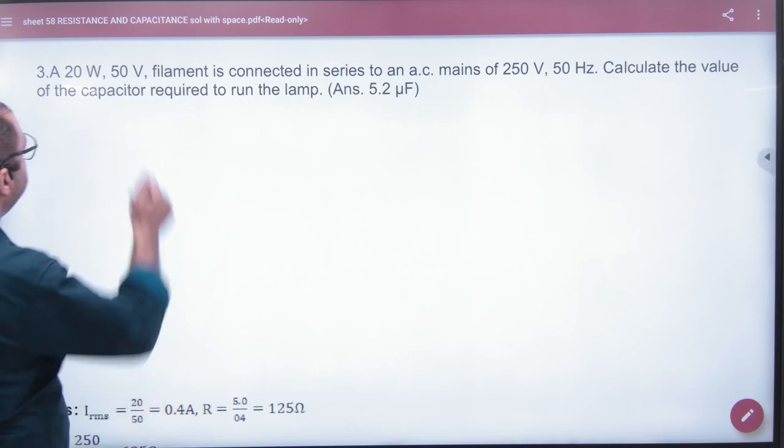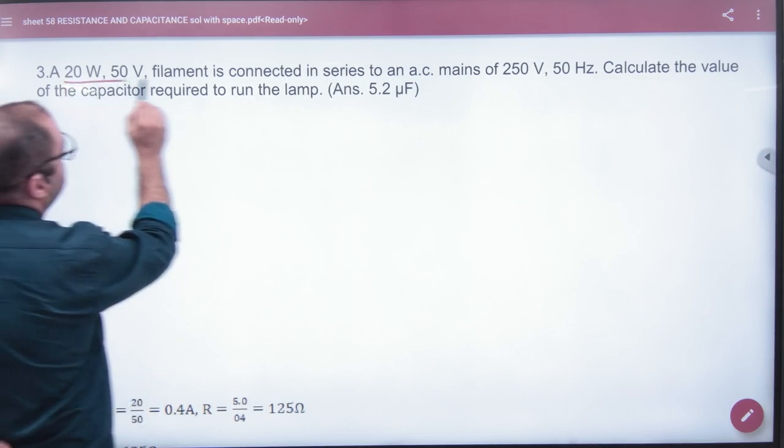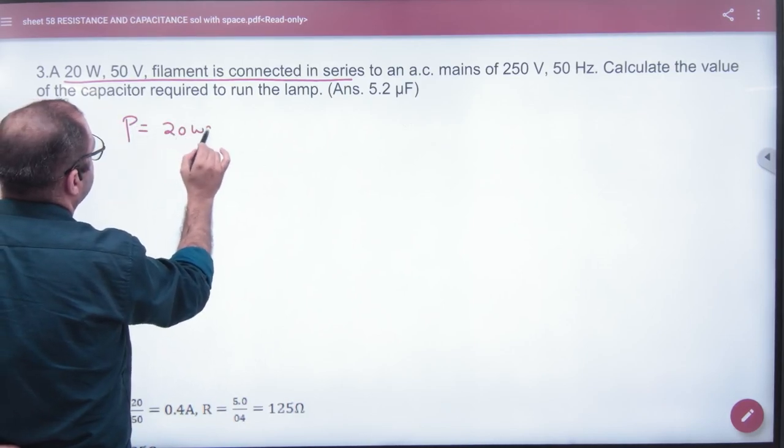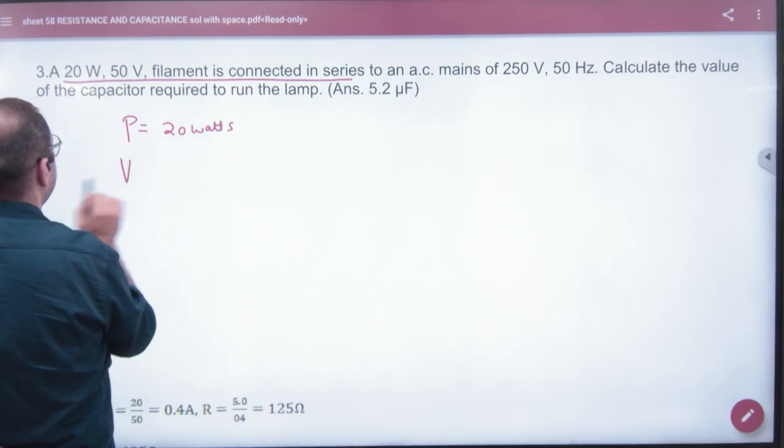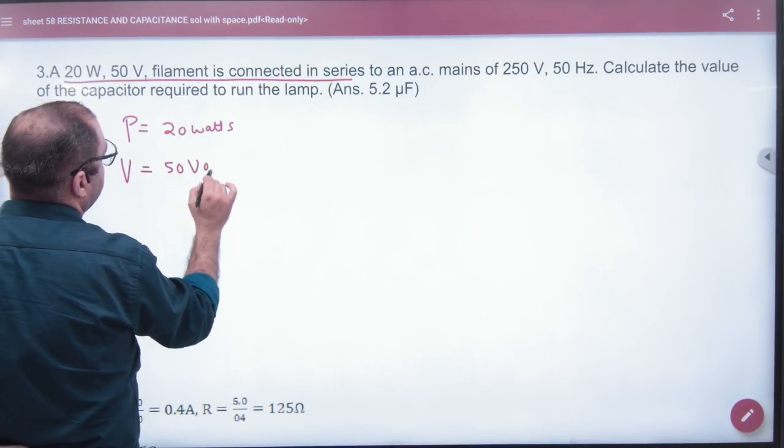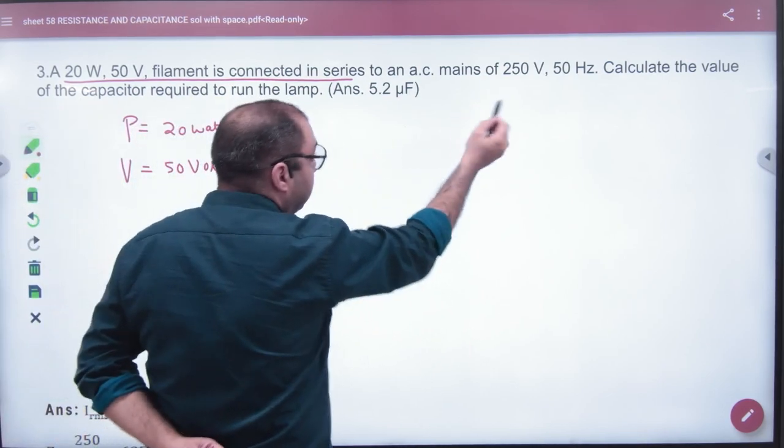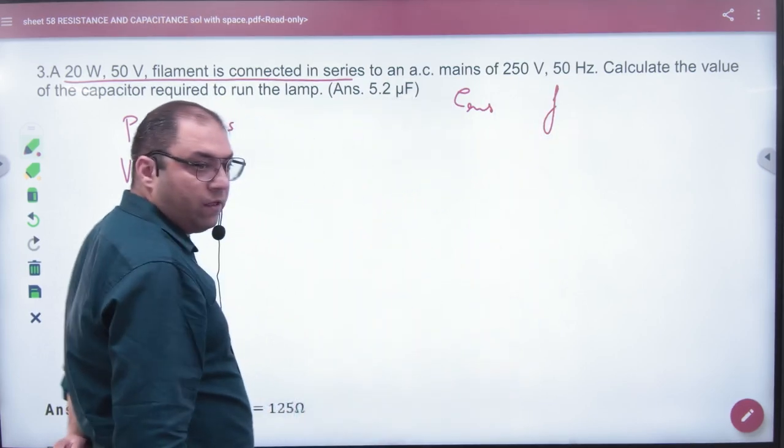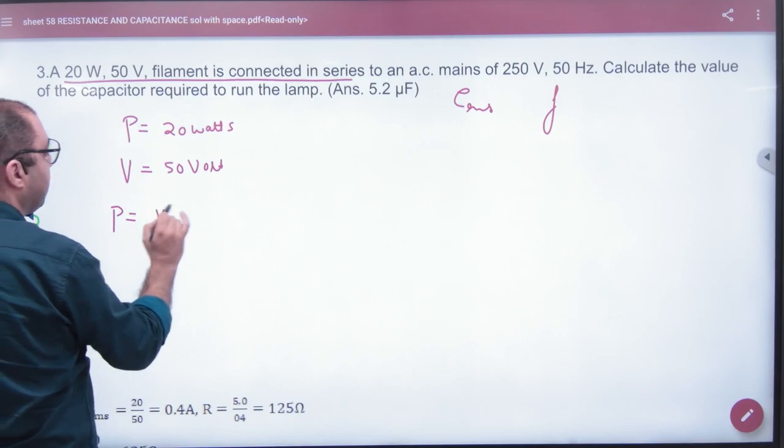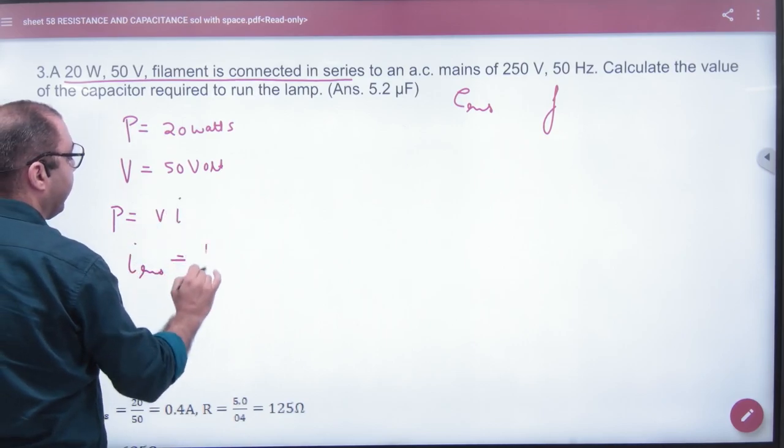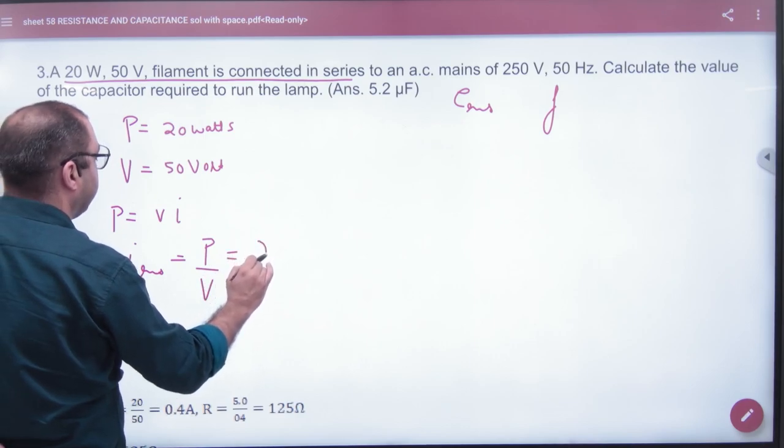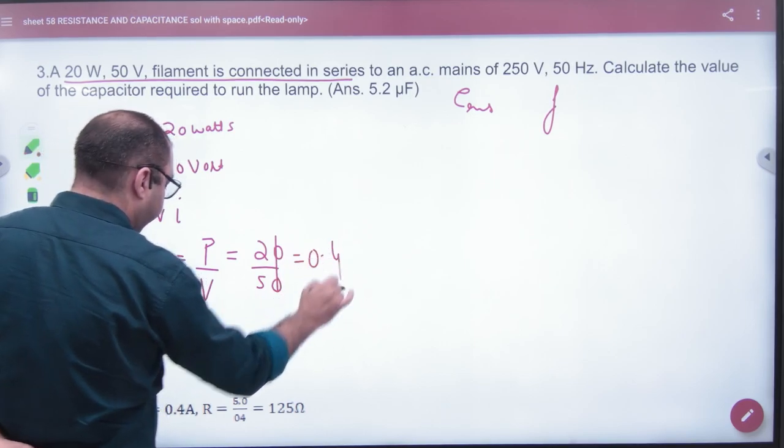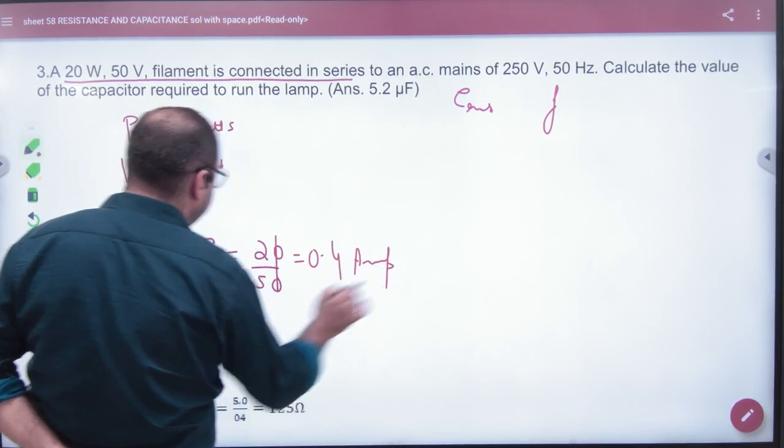Question number 3: A 20 watt, 50 volt filament is connected in series. First of all, what is given? Power value is given 20 watts. And what is given in V? 50 volt. Connected in series to AC mains - what is given? E RMS and frequency is given. So this is AC connected. So let's do the work: P is equal to V into I, which will be automatically I RMS. So here we divide 20 by 50, so 0.4 amp, you will have RMS current.